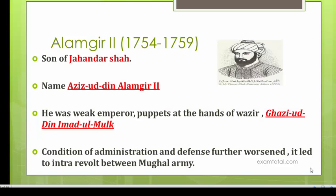As discussed, Ahmad Shah was deposed from the throne by his own vizir, who got a proposal passed in court for his deposition. After Ahmad Shah, Jahandar Shah's son Azizuddin — whose real name was Azizuddin — was raised to the throne with the name Alamgir II. He was a very weak ruler and just a puppet in the hands of his vizir Ghaziuddin Imadul Mulk.